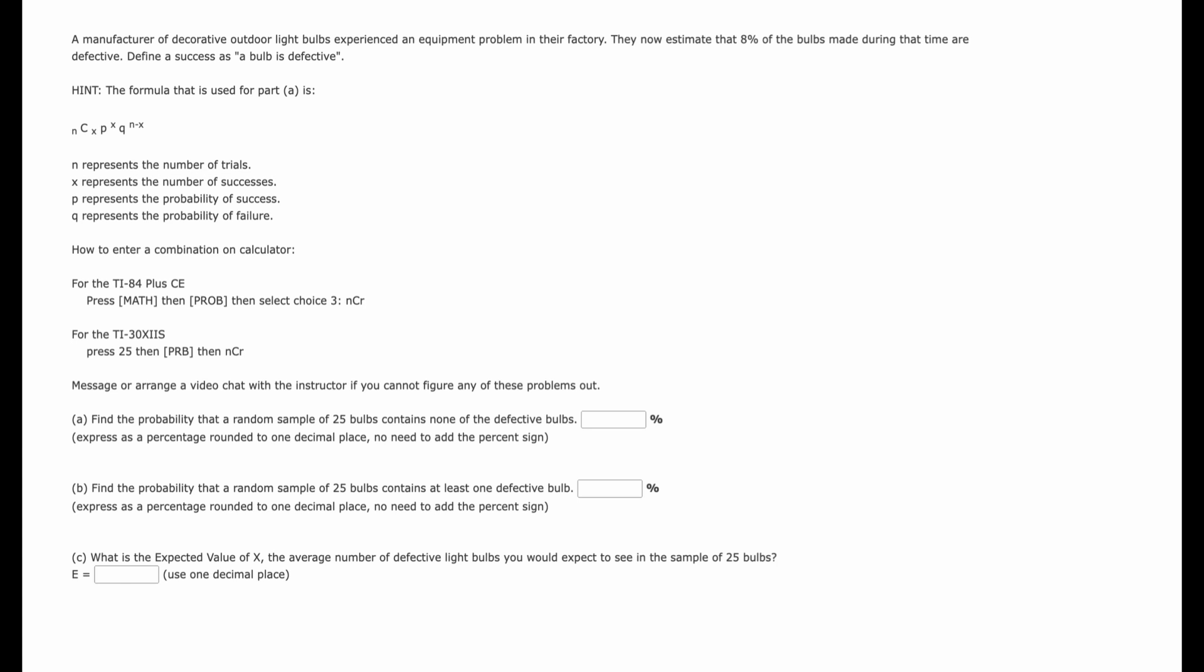There's a formula for exactly X successes in N trials. And it says find the probability that a random sample of 25 bulbs contains no defective bulbs.